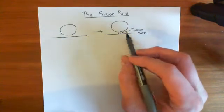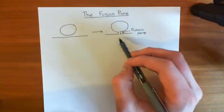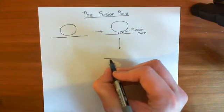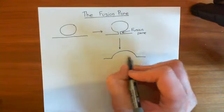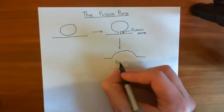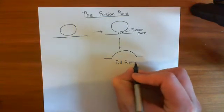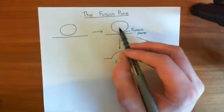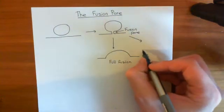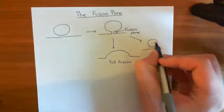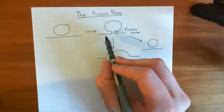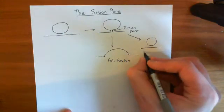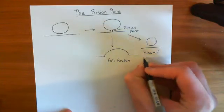You form this fusion pore which connects the synaptic vesicle lumen with the extracellular space. What can happen is you go on to either full fusion, where the whole synaptic vesicle fuses with the plasma membrane and releases all of its neurotransmitter contents into the synaptic cleft. Or you can go through what's known as the kiss-and-run process, where you form the fusion pore, a little bit of neurotransmitter moves out into the synaptic cleft, and then you close the fusion pore without going through full fusion — the synaptic vesicle kisses the plasma membrane, releases a tiny bit of neurotransmitter, and then closes and runs off.